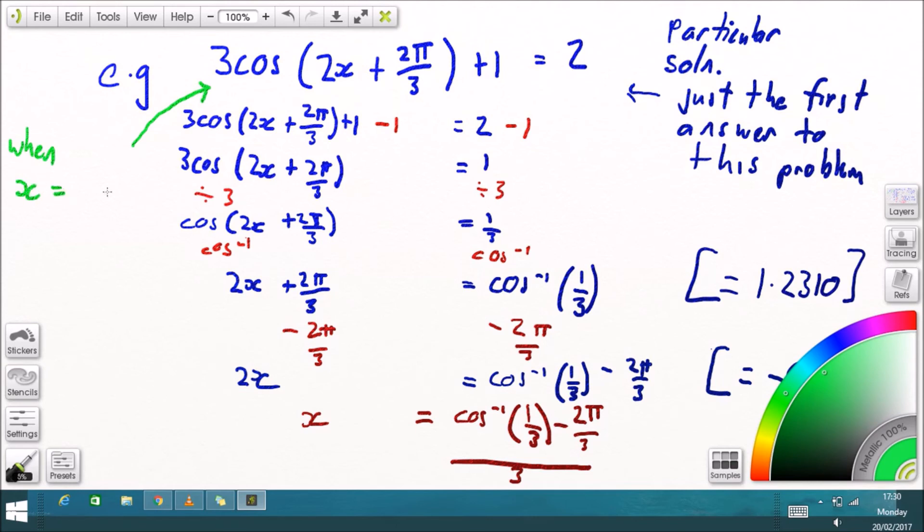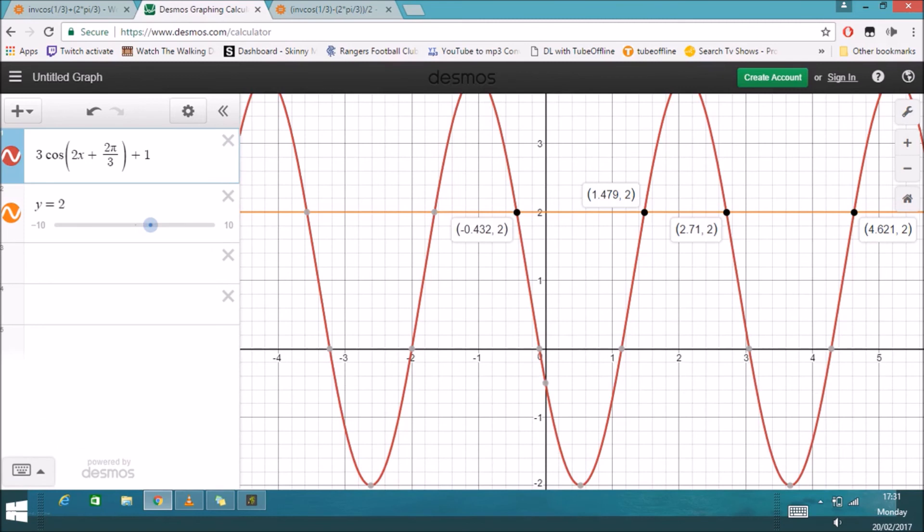So when does this whole equation here equal 2? Well, it's when x equals negative 0.43. That's not the answer we first clicked on, but if I look just back here on my graph, there it is: negative 0.432. That might not be the first answer you want.